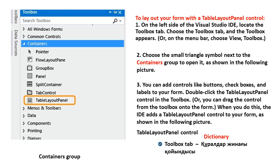Double-click the Table Layout Panel control in the Toolbox, or you can drag the control from the Toolbox onto the form. When you do this, the IDE adds a Table Layout Panel control to your form as shown in the following pictures.